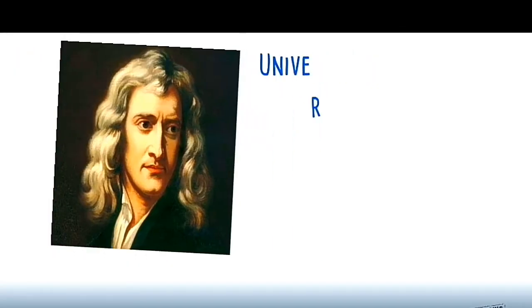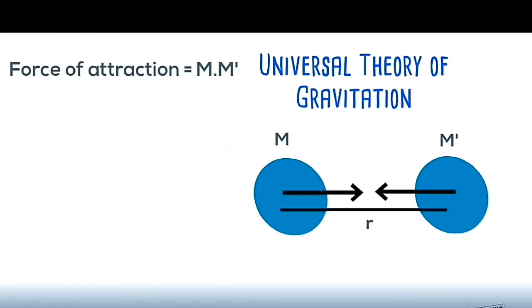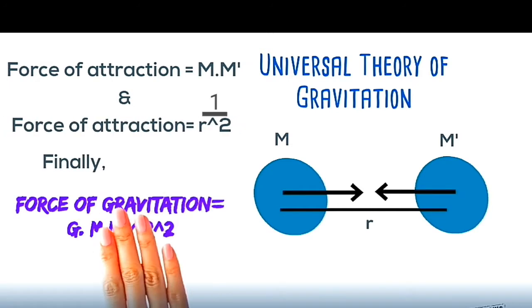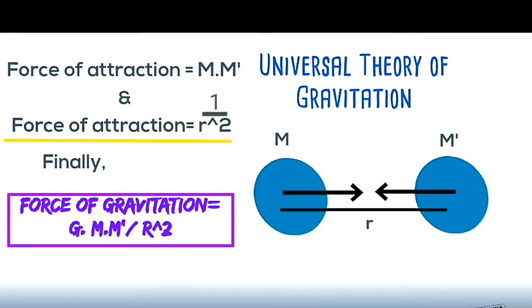And just after Galileo, Newton formulated his universal theory of gravitation. Newton explained that there is an attractive force which is present between two masses and is directly proportional to the product of their masses and inversely proportional to distance between them squared.